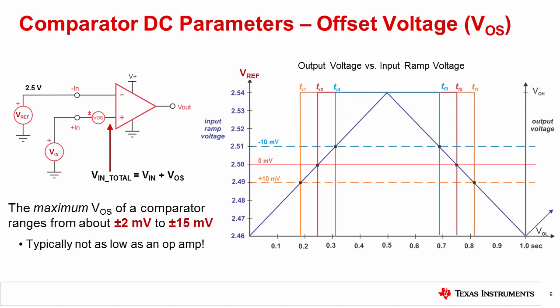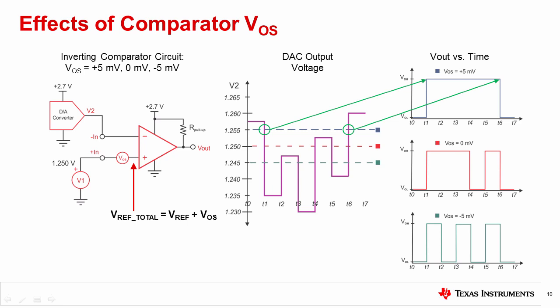Many engineers used to designing with modern op amps may be accustomed to offset voltages in the range of microvolts to a few millivolts. Comparators typically have offsets which are somewhat higher, ranging from about ±2 millivolts up to ±15 millivolts. In some cases, the offset voltage of the comparator can completely change its output signal. Consider an inverting comparator with its input signal provided by a digital-to-analog converter (DAC), which generates analog voltages based on digital codes, with a reference voltage of 1.25 volts, and the offset voltage changing from +5 millivolts to 0 millivolts to -5 millivolts.